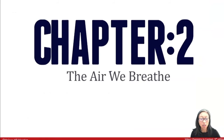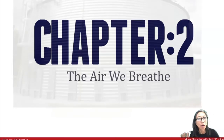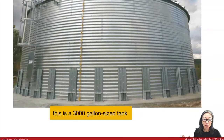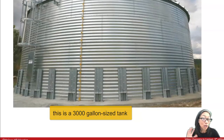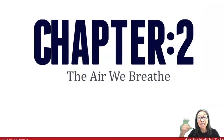You breathe in air and other things, and we're going to get into exactly what the composition of air is. You take in oxygen — you take in air to the tune of about 3,000 gallons per day, and then you exhale. In the mixture of gases that you exhale, there's a lower concentration of oxygen and a higher concentration of carbon dioxide.